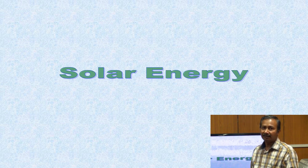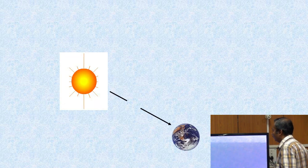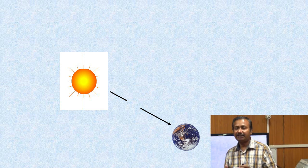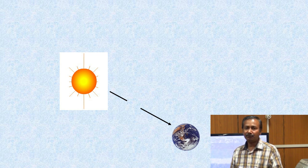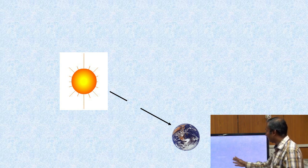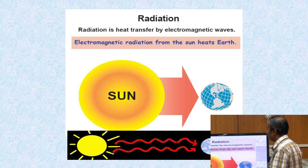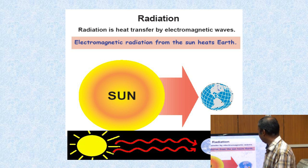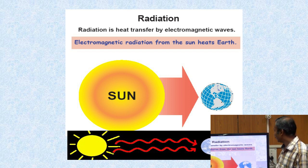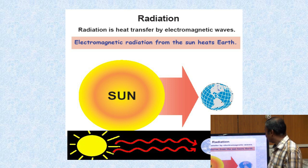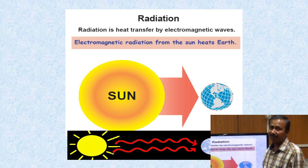Now I will focus on solar energy. Solar energy is received from solar radiation. The sun gives both heat and light, and that solar radiation is utilized for various purposes. From the sun we receive heat through electromagnetic waves. Electromagnetic radiation from the sun heats the earth's surface, and that energy we have to harness with the help of suitable technique and principle.